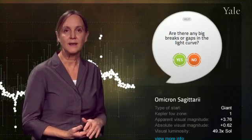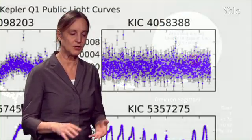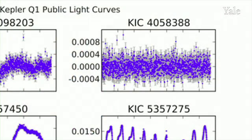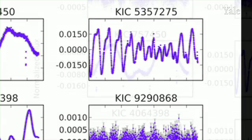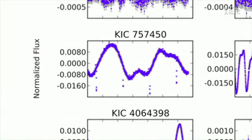The second question will be, is the star variable? Does the light look sort of scattered but constant? Or do you see cyclical variations in the star that have periods of days or months perhaps?